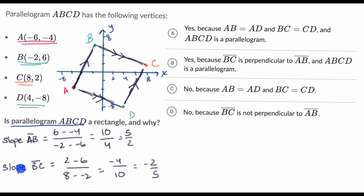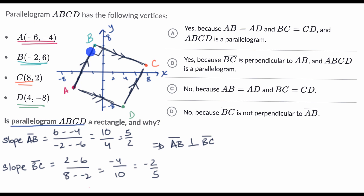So these are perpendicular lines — segment AB is perpendicular to segment BC. And in a parallelogram, if one set of adjacent sides intersects at a right angle, all of them are going to intersect at a right angle. This is enough evidence to know that this is indeed a rectangle. If you continue the analysis, you'll find that all adjacent sides are perpendicular as well.